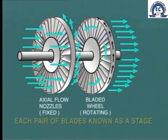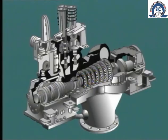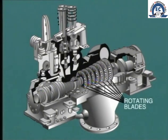Each pair of stationary and associated moving blades are known as one stage. Most steam turbines contain many stages of blading. In this example of a single cylinder machine shown here, we have seven stages. And do not forget the stationary blade is always ahead of the moving blade.